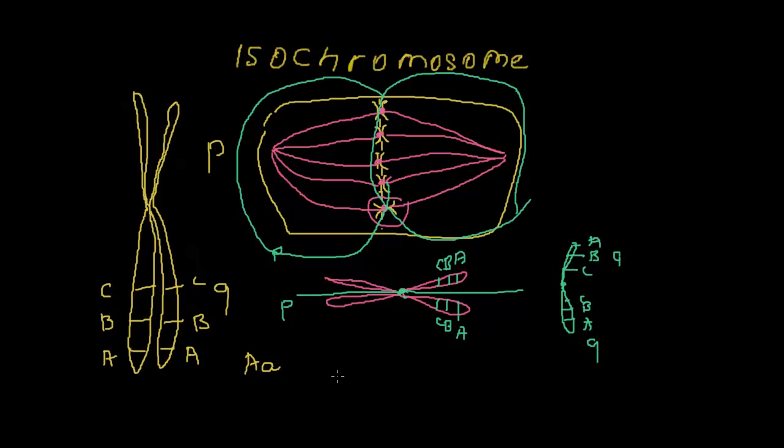And usually it happens to chromosome number 12, number 21 and X chromosome and Y chromosome, usually with long arms of these sex chromosomes.